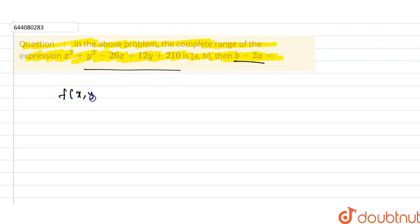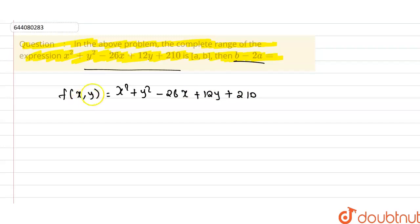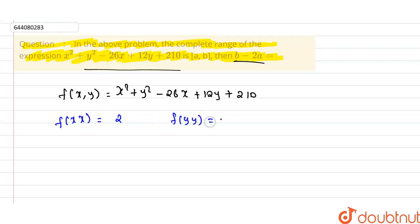So our f(x, y) = x² + y² - 26x + 12y + 210. Now if we compute the second partial derivatives: f_xx = 2 and f_yy = 2, since the power of x and y is 2.